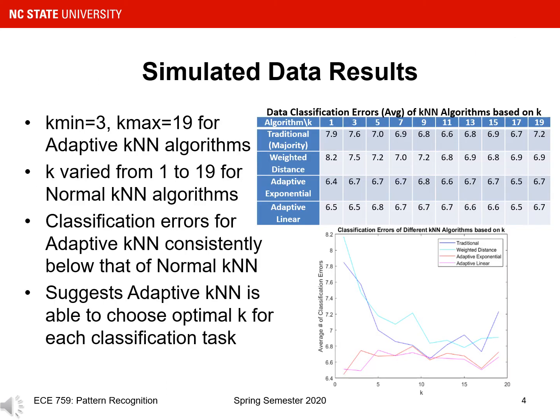Here I detail the results for the simulated Gaussian data. For my experiment, I varied k from 1 to 19 for the normal KNN algorithms. For my adaptive KNN algorithms, I kept k-min at 3 and k-max at 19 always. The idea behind this setup is that we can see if the adaptive KNN algorithms do a good job of picking an optimal k-value when classifying, compared to the optimal k-classification results of the normal KNN algorithms. As can be seen from the table and graph on the right, classification errors for my adaptive KNN algorithms were consistently below those of the normal KNN algorithms. This result suggests that my adaptive KNN algorithm is able to choose the optimal k for each classification task, as it outperforms even the optimal k-value results of the normal KNN algorithm. This is a very promising result.